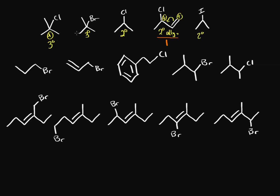Then we have two tertiary cations that are equally stable, so we look at the leaving group. Bromine is larger — it's further down the periodic table, bigger, more polarizable, and more stable with a negative charge when it leaves. So bromine is a better leaving group, making that molecule number two and the chlorine tertiary number three.